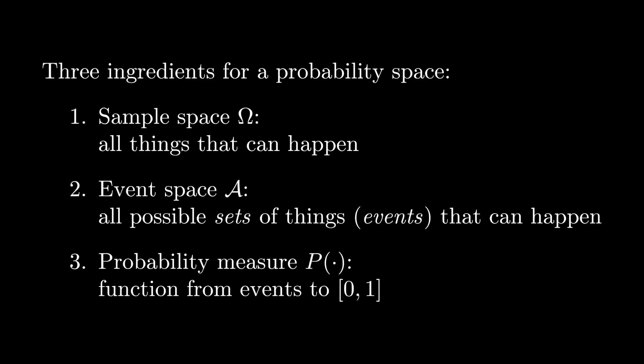We construct a probability space in order to formally reason about the asymptotic frequencies of different outcomes. There are three main ingredients, and for that reason, probability spaces are sometimes referred to as probability triples. The first ingredient is the sample space, which we're denoting here as omega, and that's the set of all possible things that can happen.